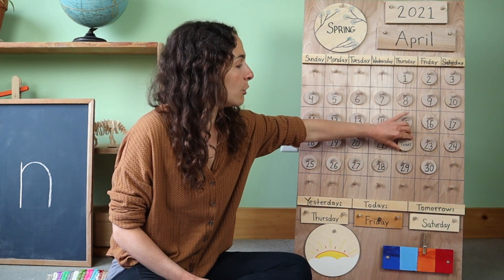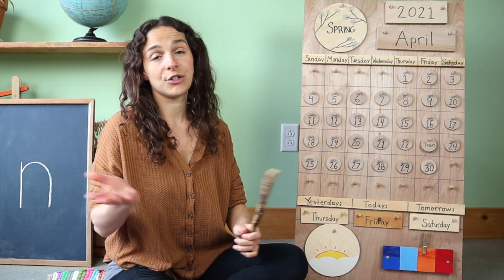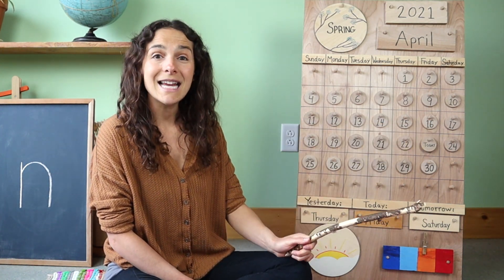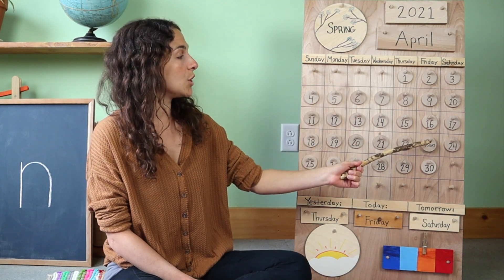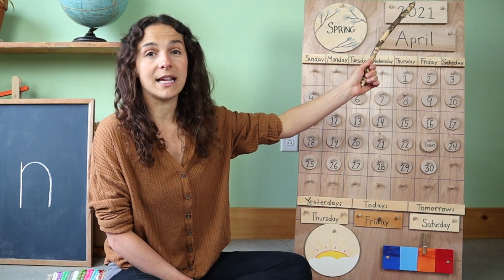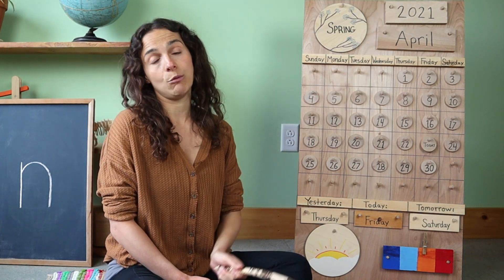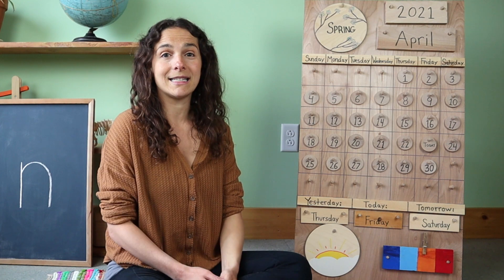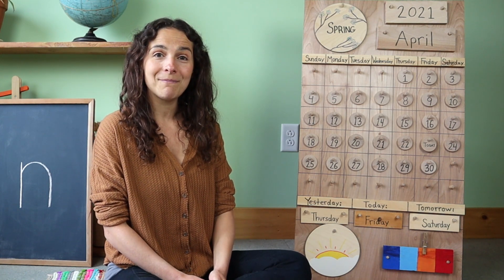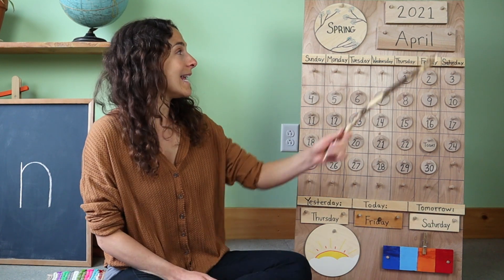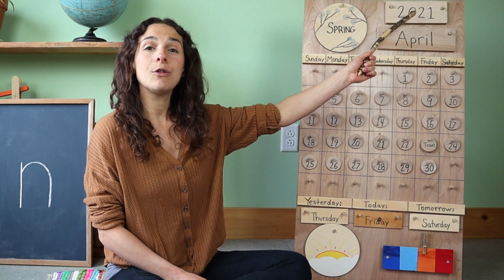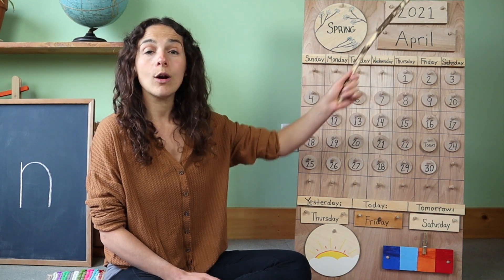Let's move our chip over from yesterday. Yesterday was April 22nd and today is April 23rd, 2021. Or you can also say that the year is 2021. There are two ways to say the year and both of them are correct. Will you say the date with me one more time? Today is April 23rd, 2021 or 2021.